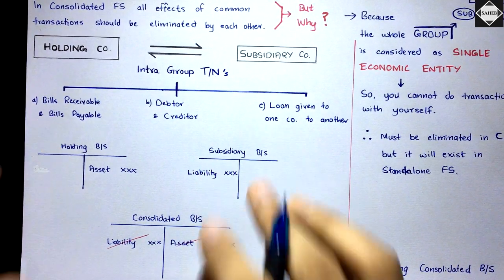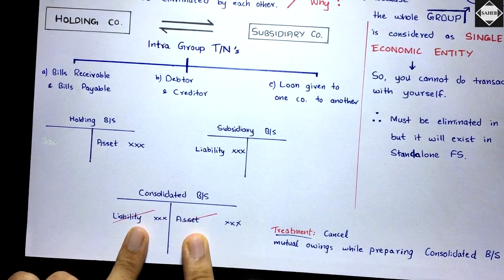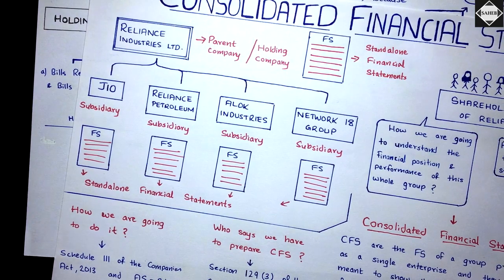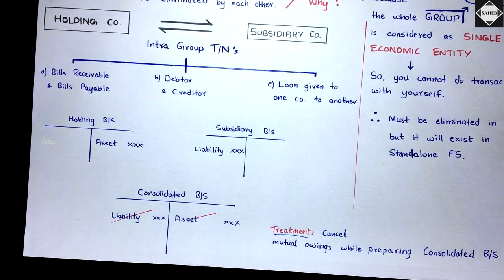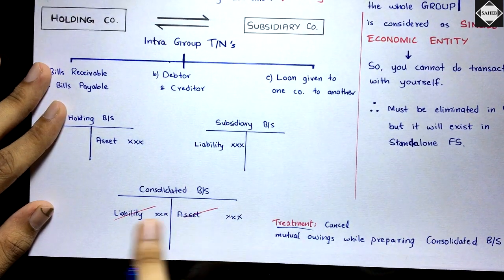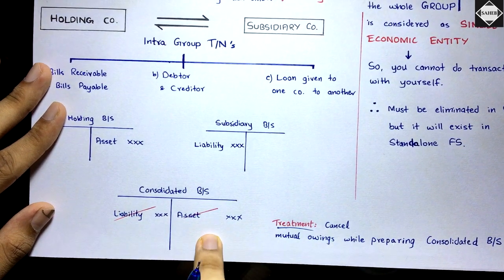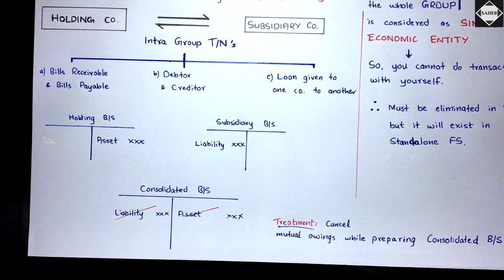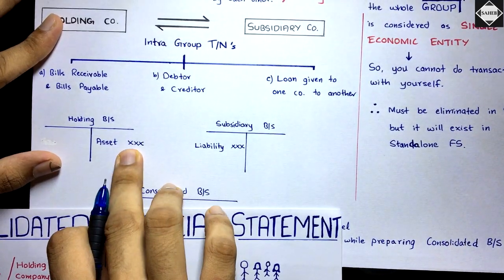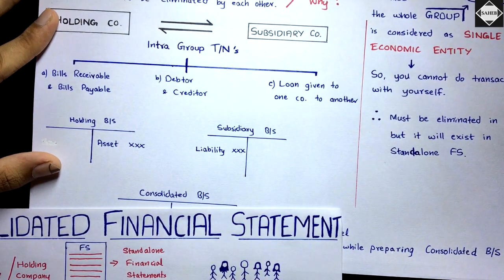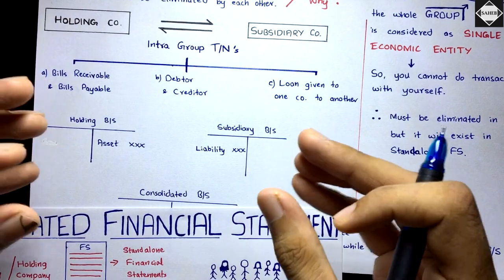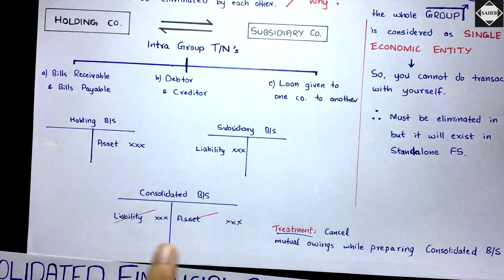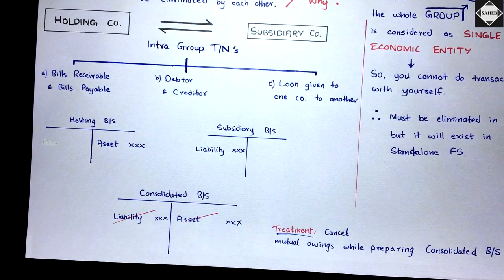When we prepare the consolidated balance sheet and consider the whole group as a single economic entity, we cancel the common balances. That same amount will be cancelled and will not be taken into the consolidated balance sheet — five lakh and five lakh cancel each other out. In the consolidated balance sheet you will show only the debtors and creditors to third parties, not within the group. The remaining balances to third parties will be consolidated together.